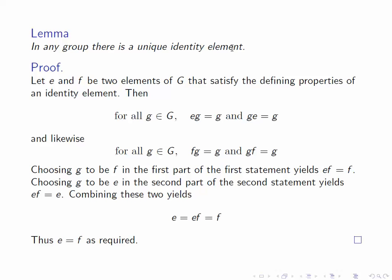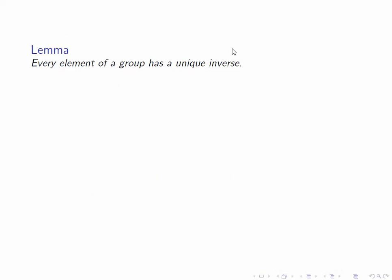So any two elements of a group that satisfy the axioms of an identity element have to be equal. Similarly, the axioms imply that there exists an inverse of any element in a group, but they don't imply the uniqueness of this inverse. However, we can quickly show that the inverse of an element is unique.